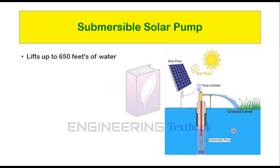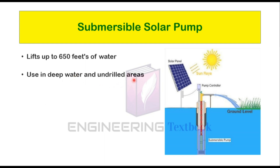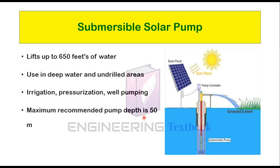The submersible solar pump can lift water up to 650 feet and can be installed in large wells. As long as the well water is more than 20 feet above the surface, this pump operates directly without batteries, solar panels, and in some cases electricity. These solar pumps are used in deep water and undrained areas. The pump is also used in irrigation, pressurization, and well pumping. The maximum recommended pump depth is 50 meters.